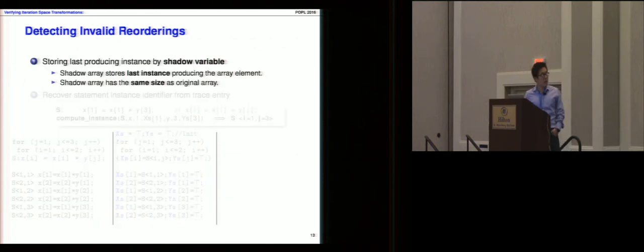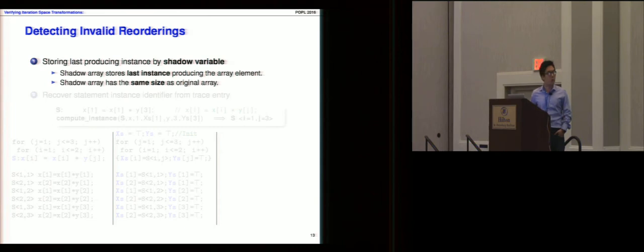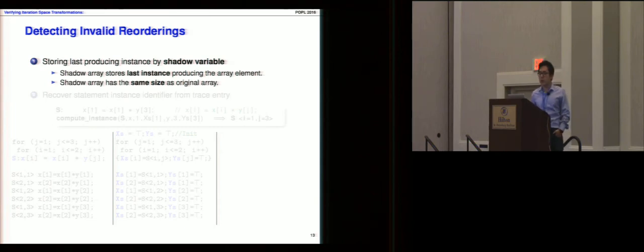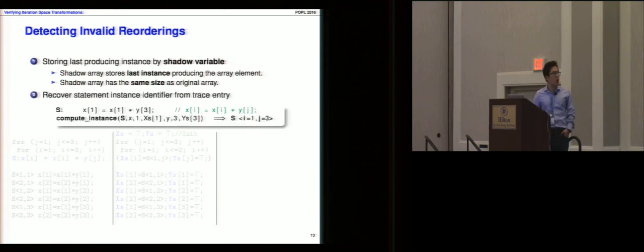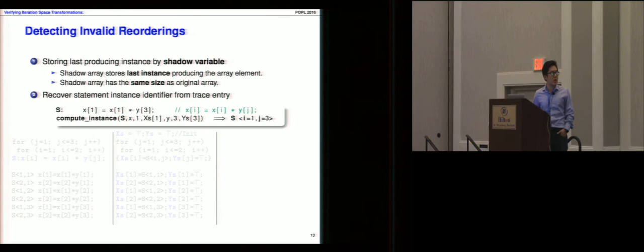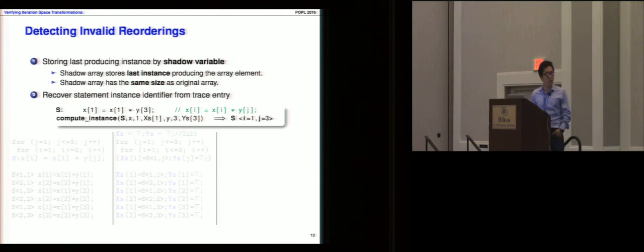Based on this intuitive example, detecting invalid reordering transformation comes down to three problems: how to recover the statement instance identifier from the execution trace, how to get the last producer of each operation, and how to check that the last producer matches the correct one. We solve the last producer problem using a shadow variable — which has the same shape as the original array — and we also recover the statement identifier using this shadow variable via a compute-instance function.